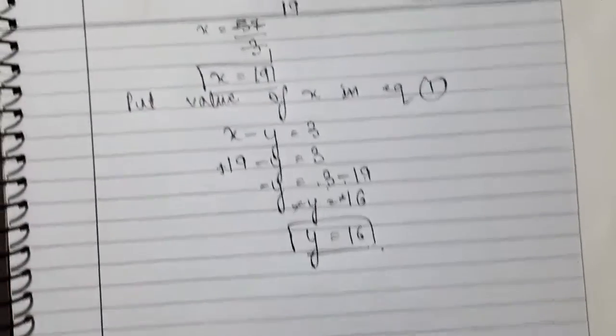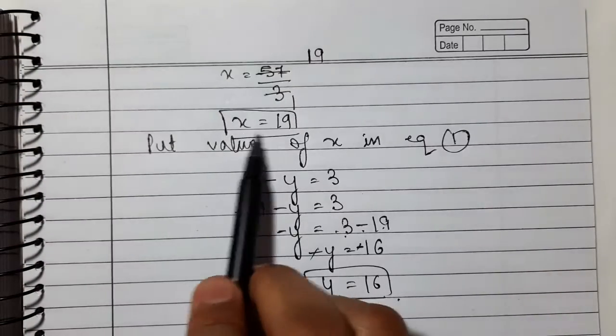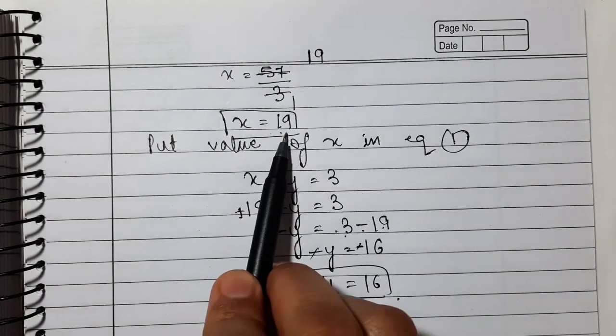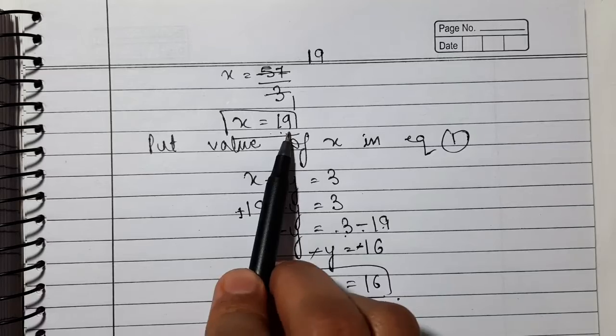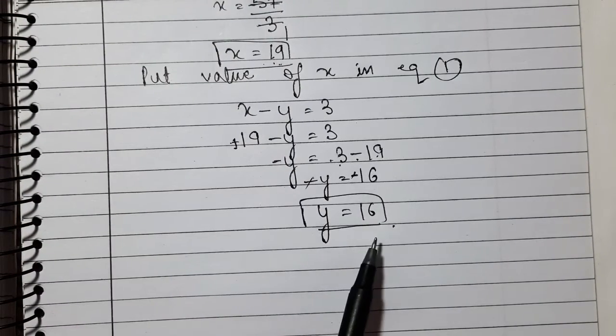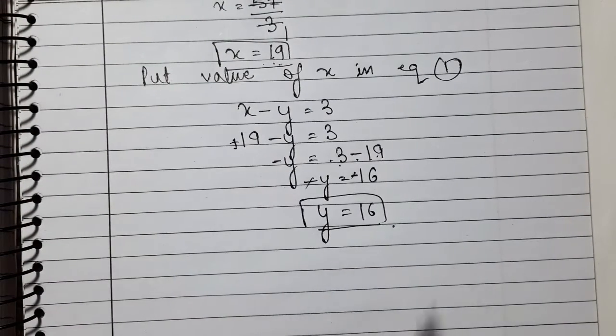If X equals 19, put the value of X into equation number 1: 19 minus Y equals 3. Shifting 19 to the constant side: minus Y equals 3 minus 19, so minus Y equals minus 16, which gives Y equals 16. This is Case 1.